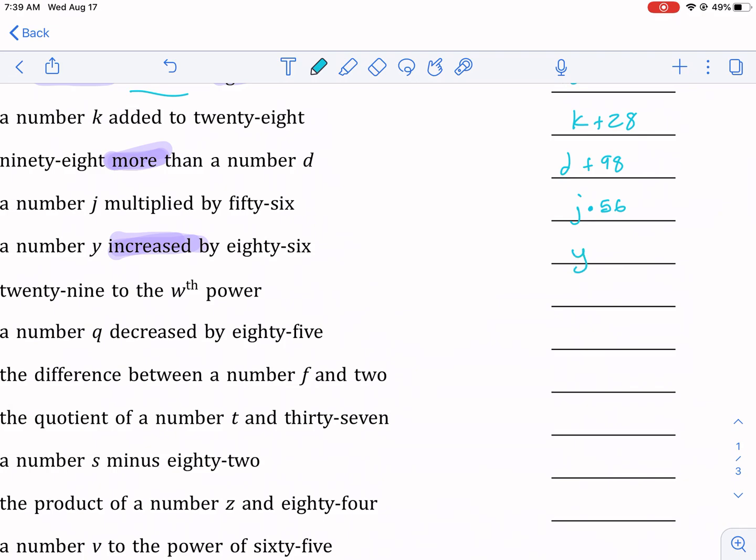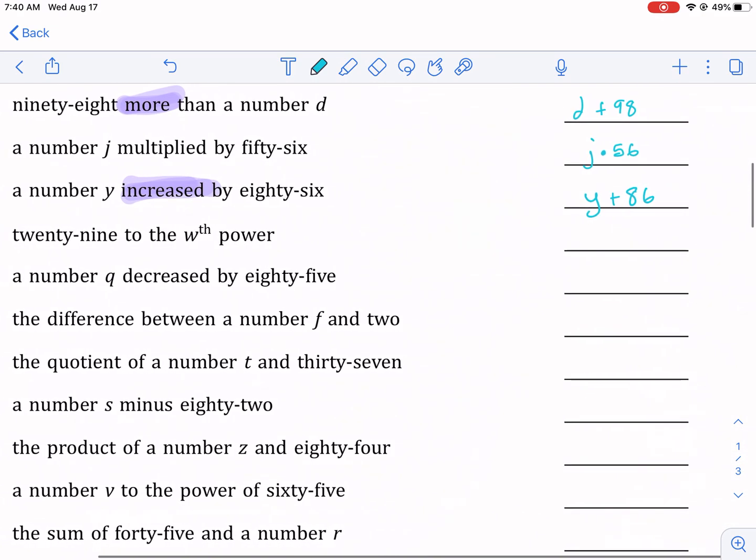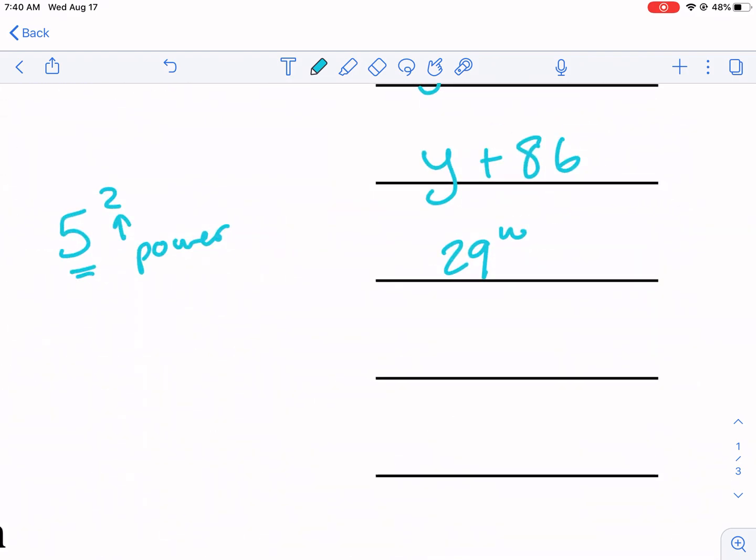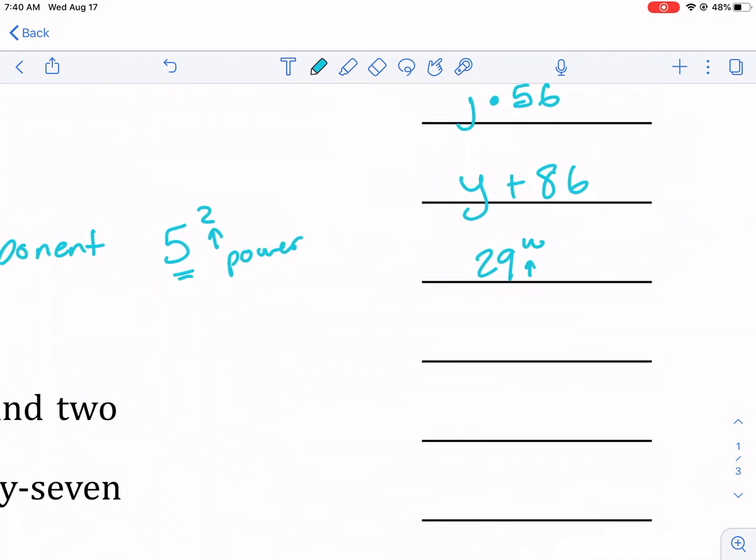29 to the w-th power—okay, now we're talking about powers, we're talking about exponents here. We're talking about something raised to a power. For example, 5 squared—that's 5 to the second power, that's the power listed there. So for 29 to the w-th power, that's what it's gonna look like: 29 with the little w, and it has to be up. Don't just write 29w all in a row—has to be up.